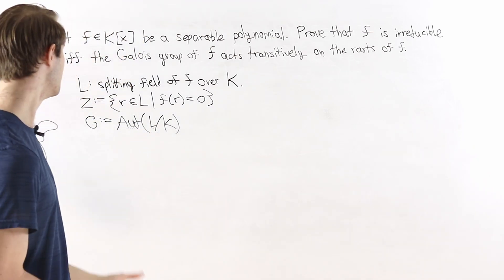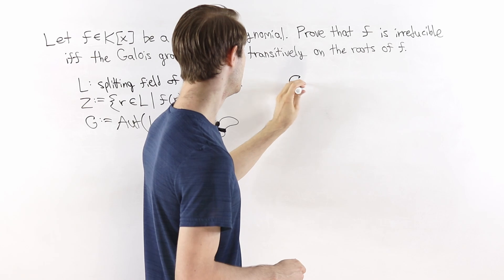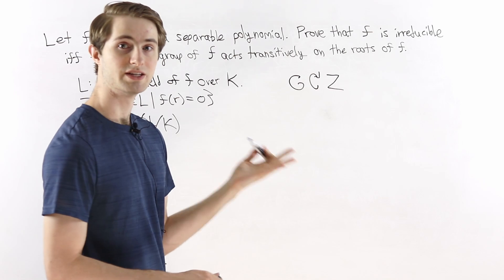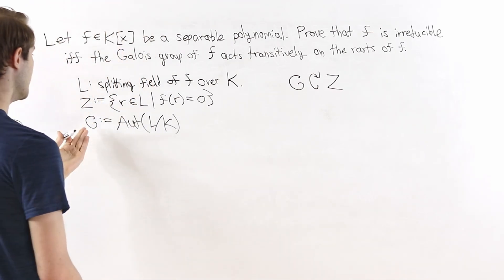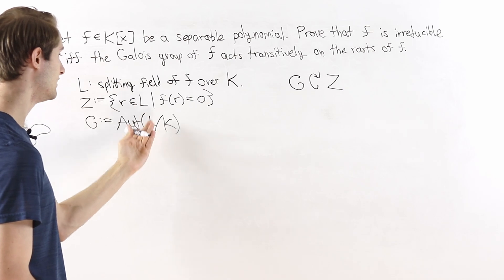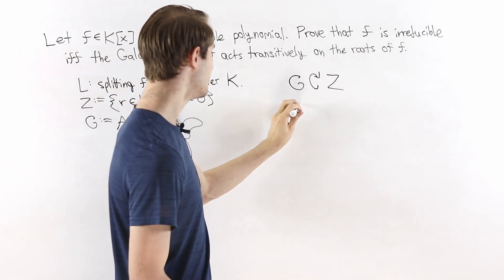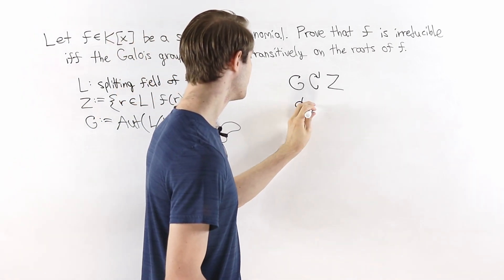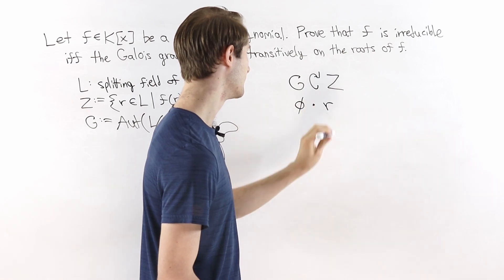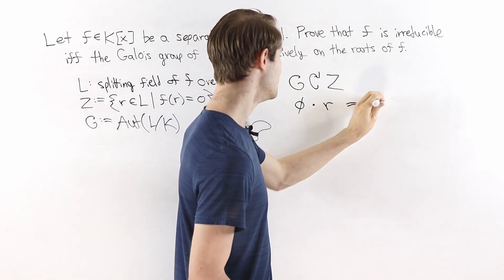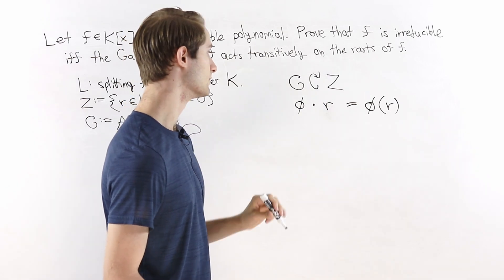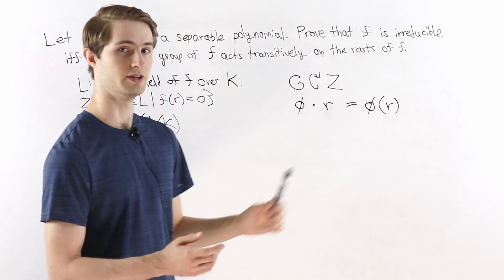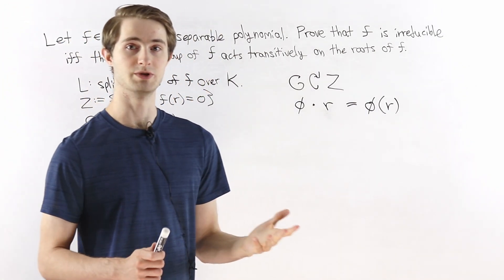Here G is the Galois group of f, and G is going to act on the set of roots Z. The elements of G are automorphisms of the splitting field L that fix the base field k. An automorphism φ acts on a root r simply as φ(r). Since φ is a function on L and r is an element of L, we can just take φ(r) and define that to be the group action.